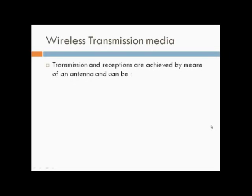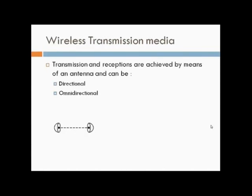Wireless transmission media: Transmission and reception are achieved by means of antennas and can be directional or omnidirectional. In directional transmission, point-to-point focused beams employ high frequencies. Transmitter and receiver must be aligned, meaning the physical path must be in line of sight.